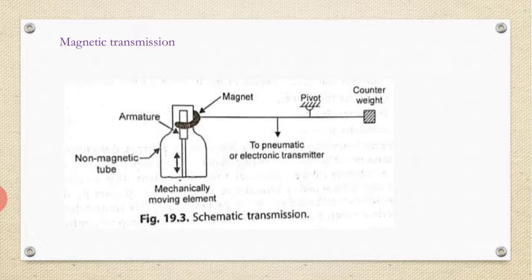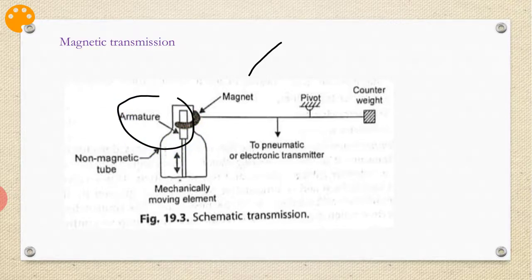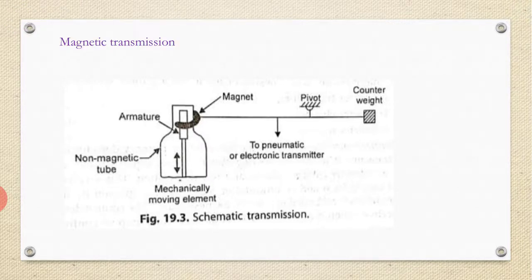The next one is magnetic transmission. Here, the schematic of magnetic transmission is shown. In this arrangement, an armature is attached at the end of the mechanical moving part whose movement is to be transmitted.